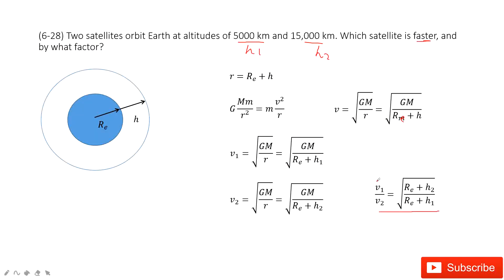Because for the closer satellite, for example, h1 is closer, so h1 is smaller than h2. The ratio shows that the closer the satellite, the faster it moves. Thank you.